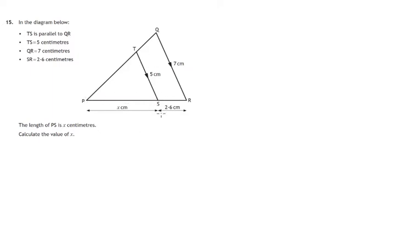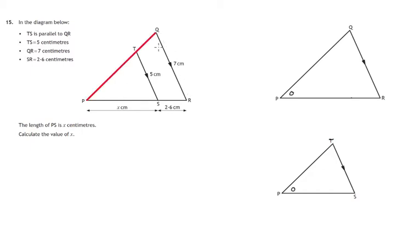Now there are two triangles in this diagram. There they are and they are mathematically similar. Why is that? The angle P occurs in both of the triangles so this angle is equal to this one. The angle Q and the angle T are both equal because these are parallel lines. We get an F shape.